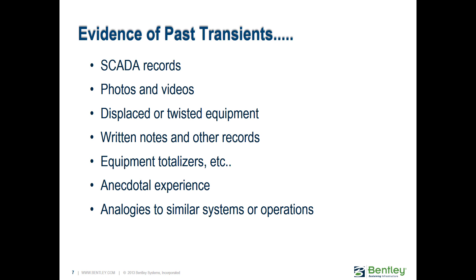When investigating transient problems, there are other things you can look at: scatter records, photos of past transient damage, videos of pipes shaking, displaced equipment or twisted pipes from transient forces, written notes from the past, equipment totalizers, anecdotal experience from colleagues, or case studies analogous to similar systems. These are the types of things you might want to gather before doing a transient analysis.